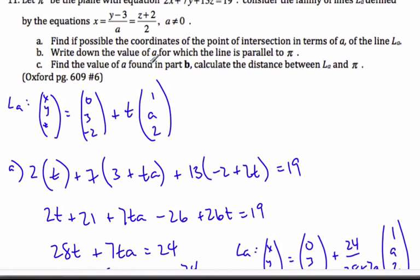For part B, write down the value of A for which the line is parallel to the plane. Well, if here's my plane and here's the line that's parallel, that must mean the normal vector must be perpendicular to the direction vector. So I'm going to dot product the normal vector and the direction vector.